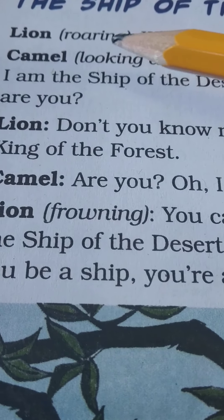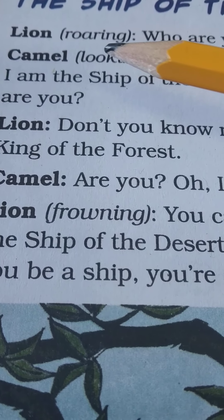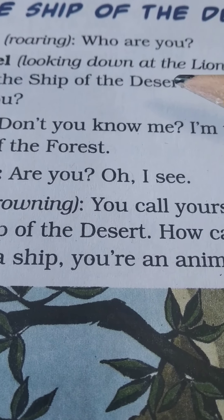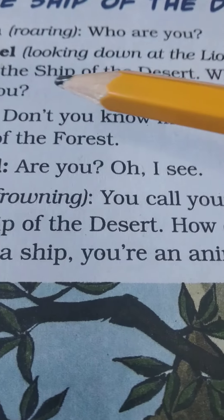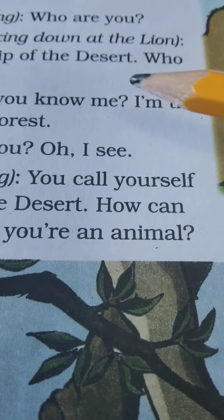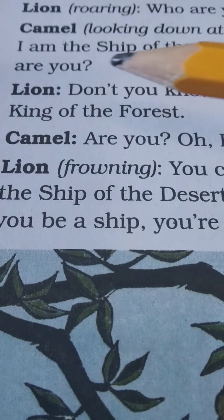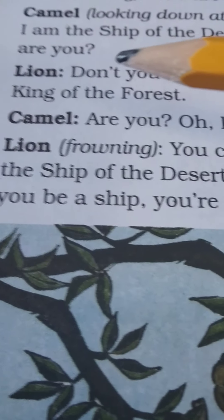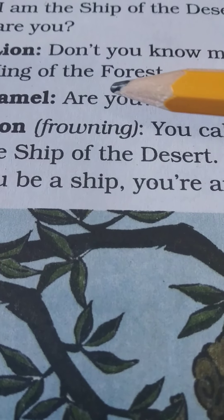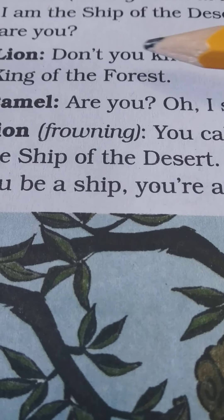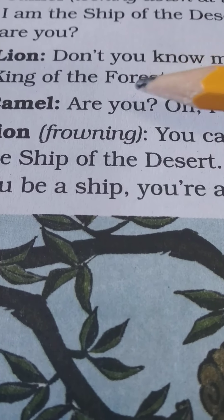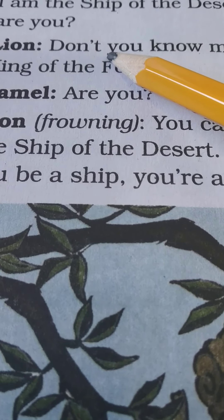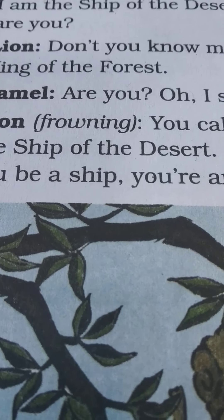Lion roaring is the instruction for the lion — or the actor — to roar: 'Who are you?' The camel should look down because he is taller than the lion, and answer only: 'I am the ship of the desert. Who are you?' Lion will say, 'Don't you know me? I am the king of the Forest.' Forest is made capital here as if it's the only forest — the name of the forest is Forest. Normally I would make it lowercase because forest is a common noun.